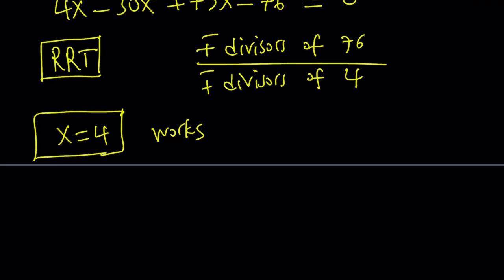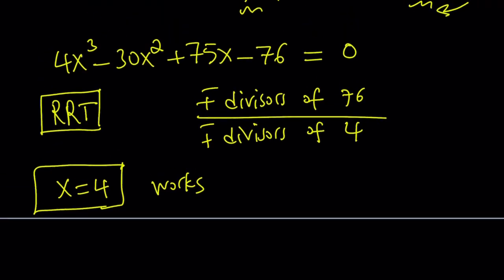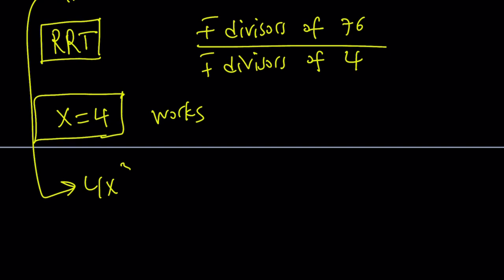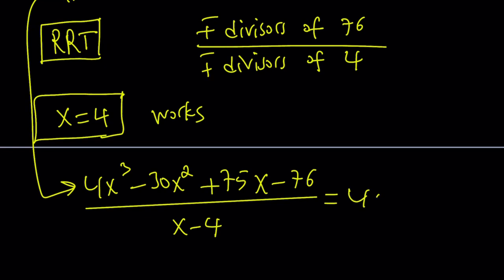Since x equals 4 works, we can do the long division, synthetic division, whatever you want to call it. You can divide this polynomial 4x cubed minus 30x squared plus 75x minus 76 by x minus 4. That's going to give you another polynomial, which is 4x squared minus 14x plus 19.